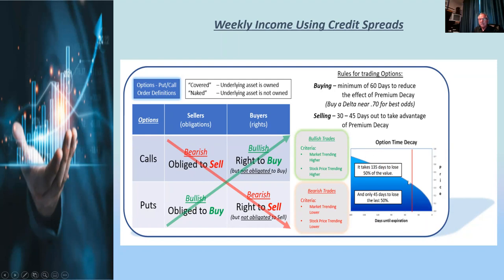It's important to understand time decay with options. Options decay over time, and the closer you get to the expiration date, the faster they decay. That premium gets cheaper and cheaper as you approach expiration because it's less and less likely the stock will hit that price. As a buyer of calls or puts, time decay works against you. But as a seller, it works for you — because you've already received the premium. As it decays to zero at expiration, if the price hasn't gone in the money, you keep the whole premium without ever buying the stock.